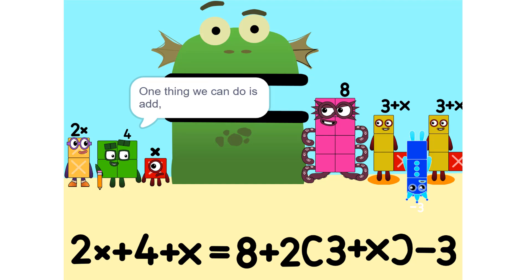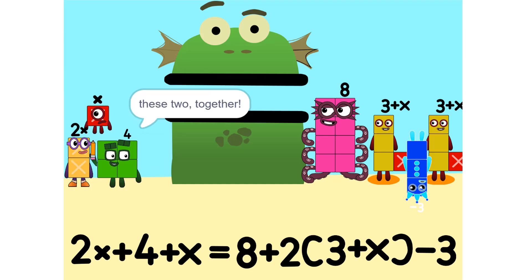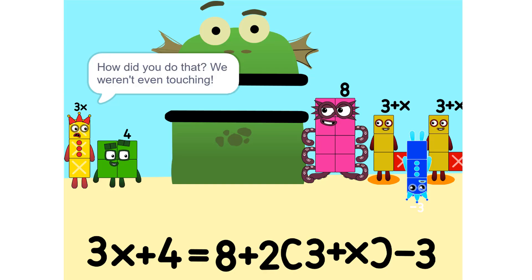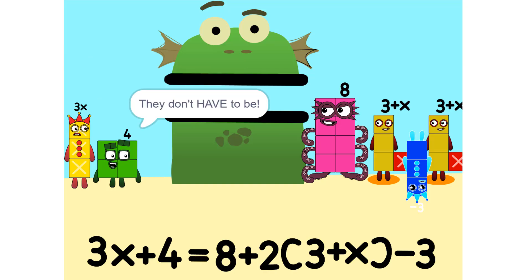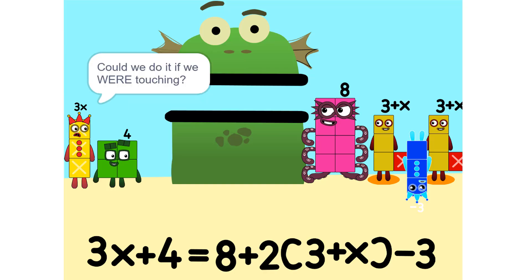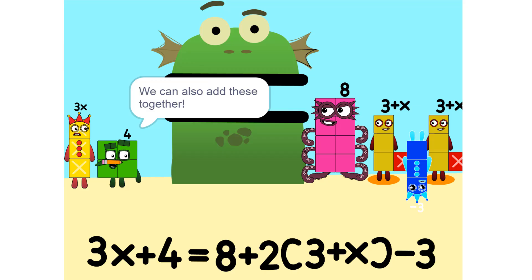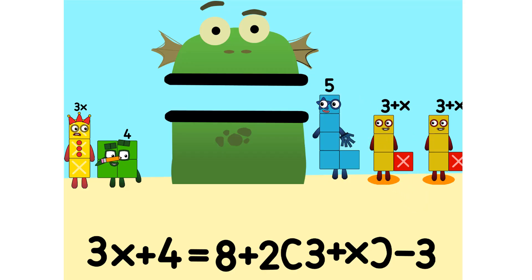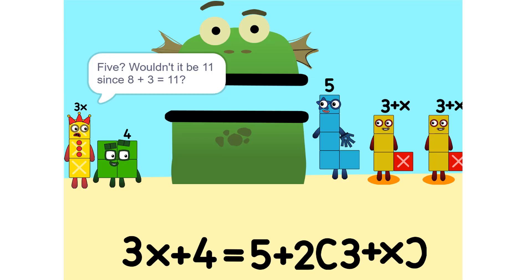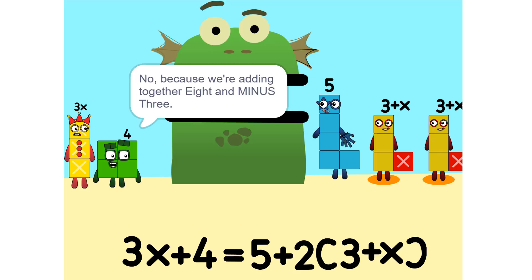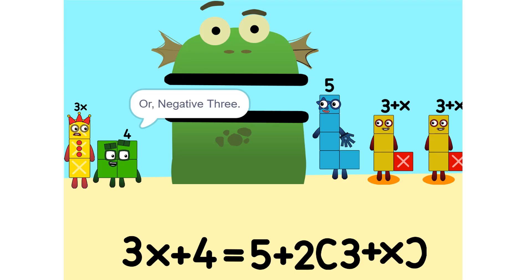One thing we can do is add these two together. How did you do that? We weren't even touching. They don't have to be. Could we do it if we were touching? Yeah. We can also add these together — 5. Wouldn't it be 11 since 8 plus 3 is 11? No, because we're adding together 8 and minus 3, or negative 3. So it's 5.